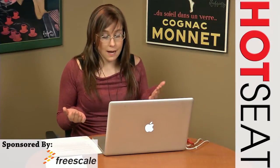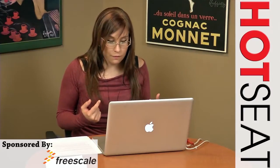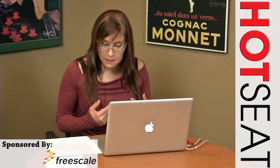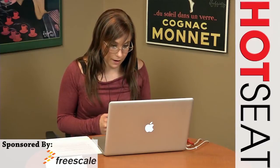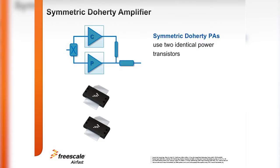Welcome Mario to the WDD Hot Seat. My first question for you is: what are the main components or specifications of Doherty amplifiers? The Doherty power amplifier consists of two sub-amplifiers — the carrier amplifier, which is often also referred to as the main amplifier, and the peaking amplifier. In its most basic implementation, the Doherty amplifier consists of two identical sub-amplifiers using the same power transistors on both sides.